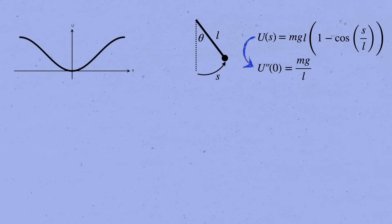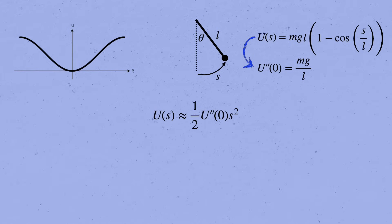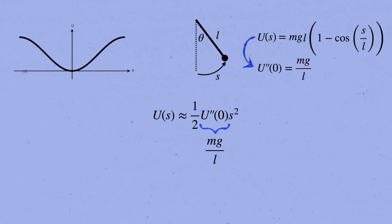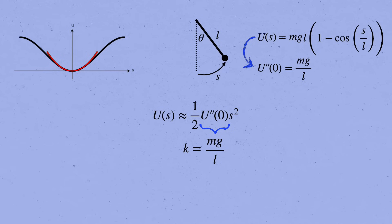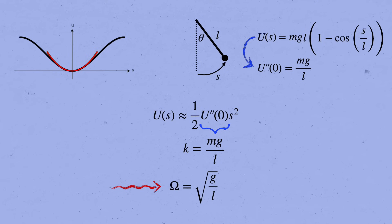So our Taylor expansion around equilibrium is u of s equals one half u double prime of zero times s squared. And if we plug in u double prime equals mg over l, we get a simple harmonic oscillator with that spring constant. The frequency of oscillations around the equilibrium, square root k over m, will therefore be omega equals the square root of g over l, which you might recognize as the familiar formula for the frequency of a pendulum.